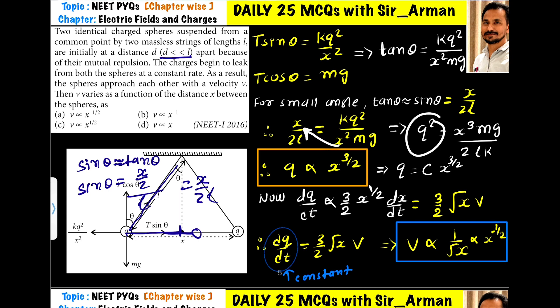q² = x³mg/2lk. Why are we doing this? Because we first find the time rate of leaking of charge—how many coulombs per second are leaking—and relate that to distance. Here, the mass of the sphere is constant, g is constant, length of the string is constant, Coulomb constant k is constant, and 2 is constant.